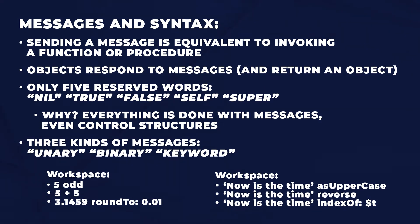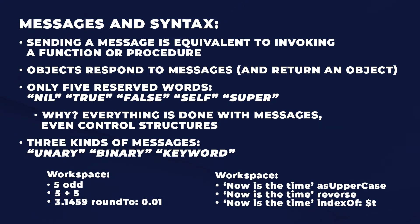Three kinds of messages: unary, binary, and keyword. Here's an integer object — you can type in '5 odd', and that's a unary message. If you highlight this and evaluate it, it will say true. Binary messages are one or two characters, and largely it's syntactic sugar to do math comfortably. Finally, there are keyword messages, which have a colon. For example, 3.1459 rounded with 'roundTo: 0.01' will return 3.15.